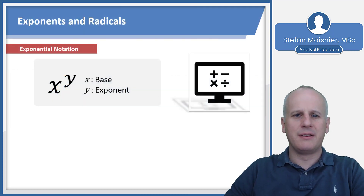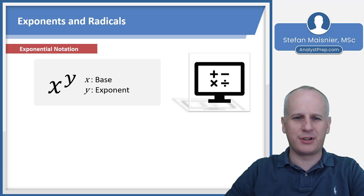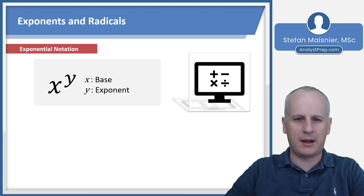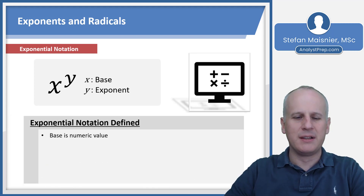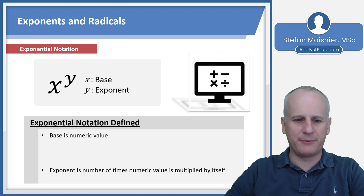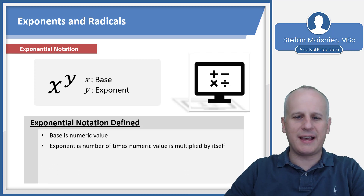Let's first define how exponential notation works. You can see here an x raised to a y above it. The x is what is known as the base, and the y is what is known as the exponent. The base is your numeric value, and the exponent is the number of times that numeric value is multiplied by itself.